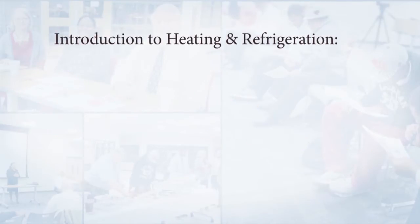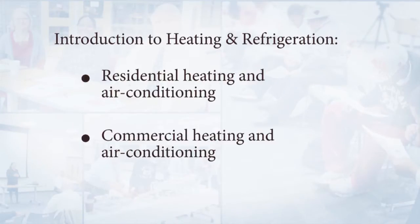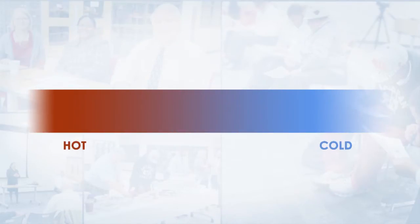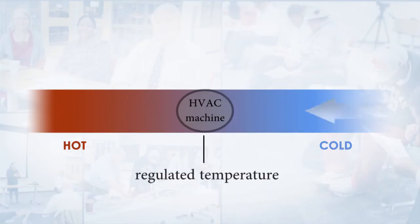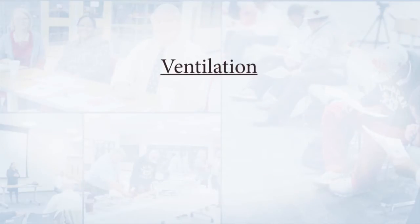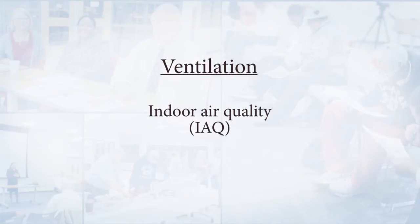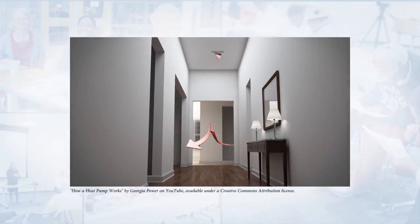We are going to talk a little bit about residential heating and air conditioning and commercial, and then we will go on from there. One of the first things you need to kind of understand about heating refrigeration is a theory where heat transfers from hot to cold. That is the principle by which how we heat and cool a house or a place of business. The ventilation part is air quality and in the field we call that IAQ, indoor air quality. When we get into that we are talking filters and humidity and things that make the living more comfortable.